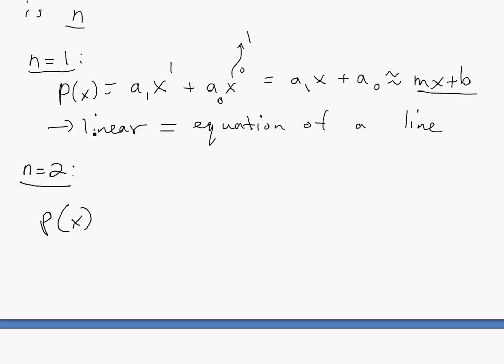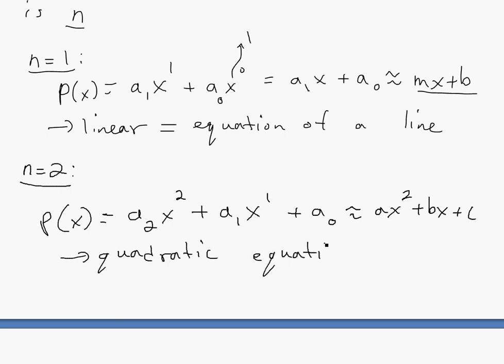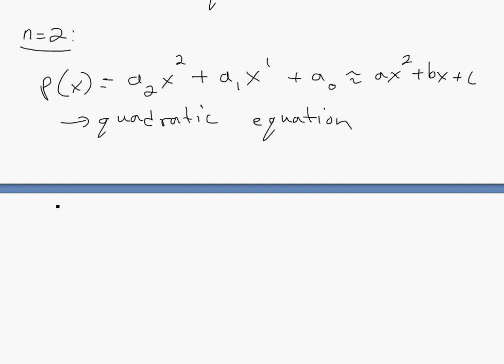So the degree 1 is just a linear equation of a line. So if you were to go n equals 2, this would be p(x) = a_2 x^2 plus a_1 x^1 plus a_0. So basically the linear one is a polynomial. And this is similar to, you could also write it as a x squared plus b x plus c, and this is just a quadratic equation.